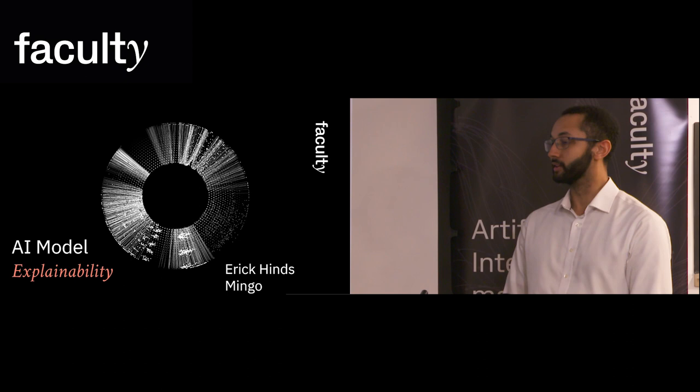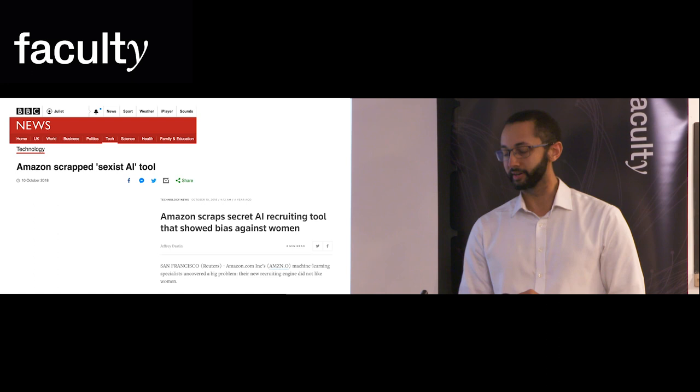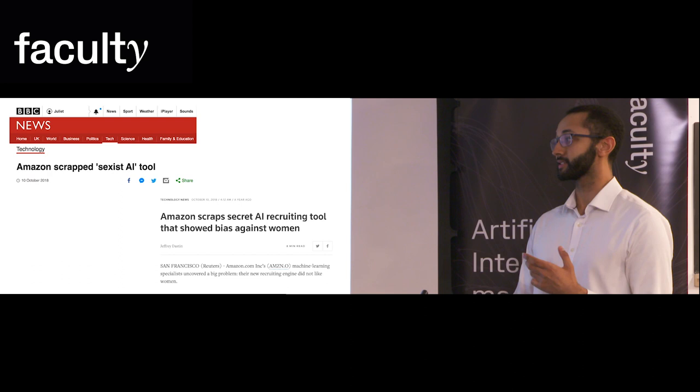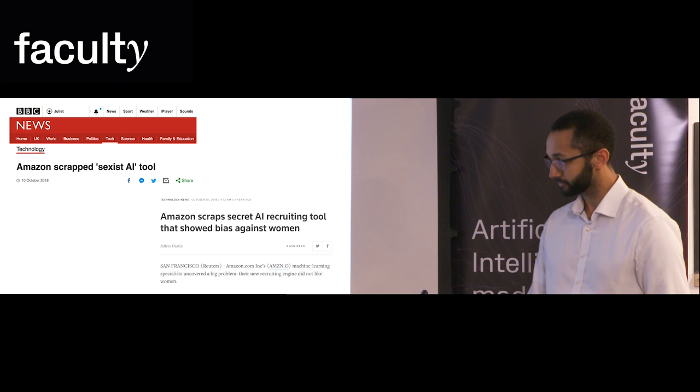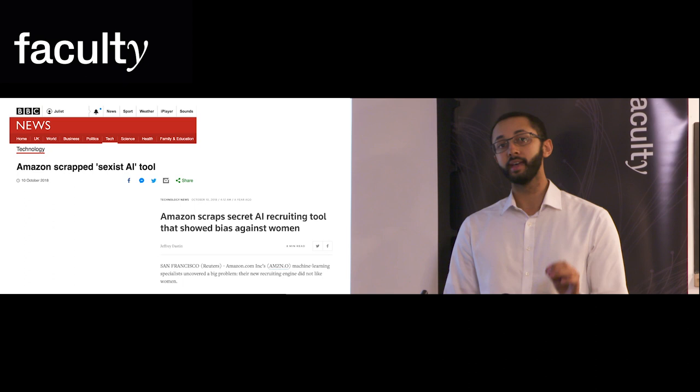Let's start with what it isn't. Two years ago, Amazon developed a CV sorting tool that was later found out to be sexist and biased against terms like women's colleges or other feminine language. Had they used model explainability tools, they could have found this out before they deployed it.